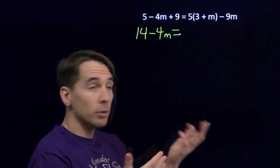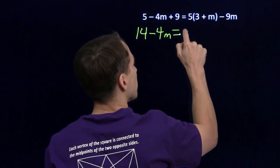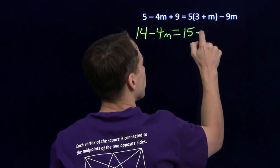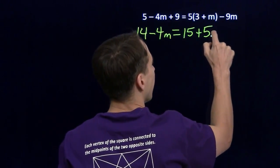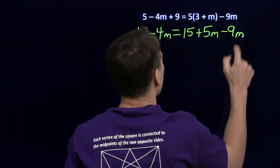Over here on the right, we have to start with the distributive property. Distribute the 5. 5 times 3 is 15. 5 times m, of course, that's just 5m, and we still have that minus 9m out there.